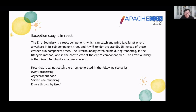The error boundary is a React component which can catch JavaScript errors anywhere in its sub-component tree and render a fallback UI instead of the crashed sub-component tree. The error boundary catches errors during rendering and in lifecycle methods. It is a concept introduced in React 16. Note that it cannot catch errors generated in event handlers, asynchronous code, server-side rendering, or errors thrown by itself.